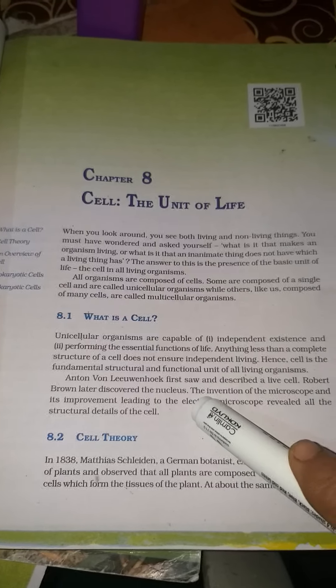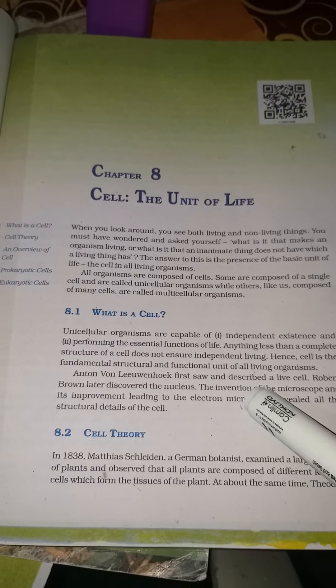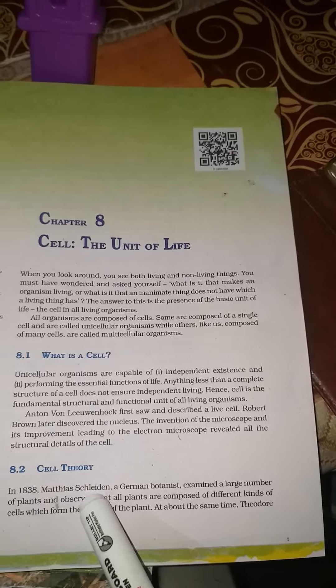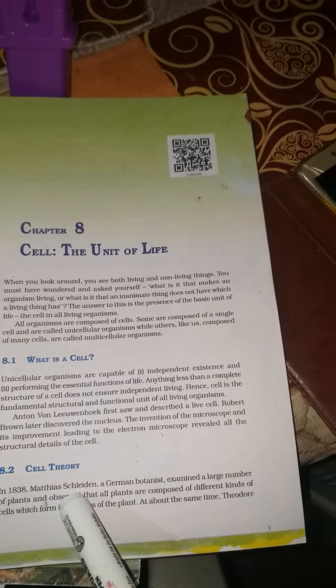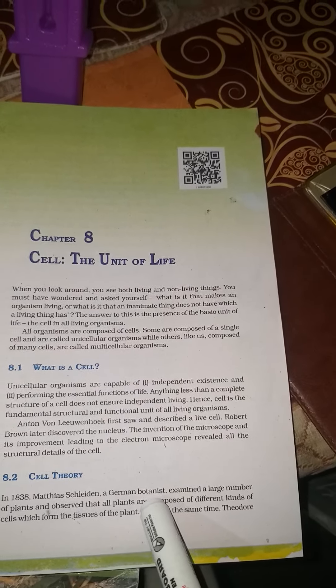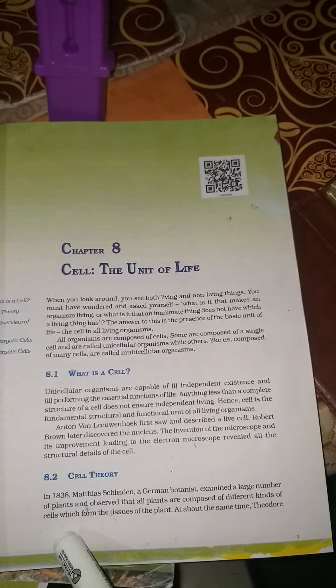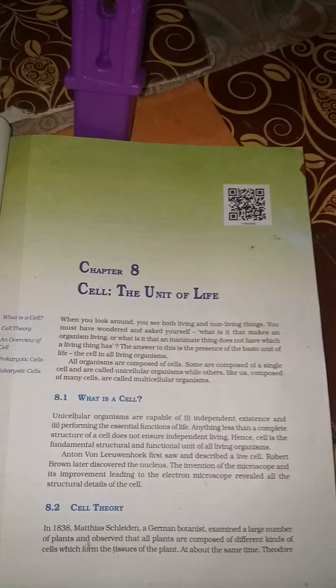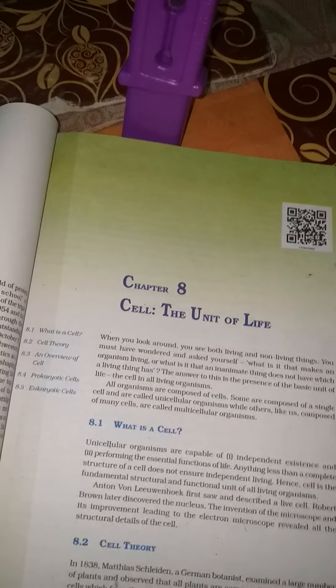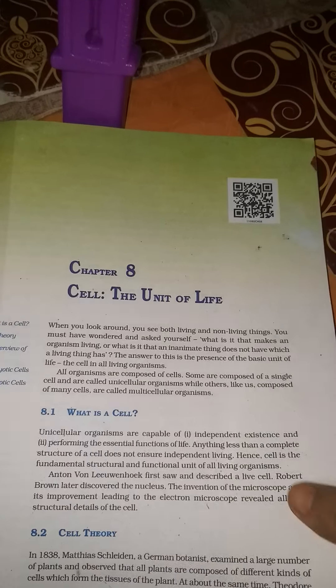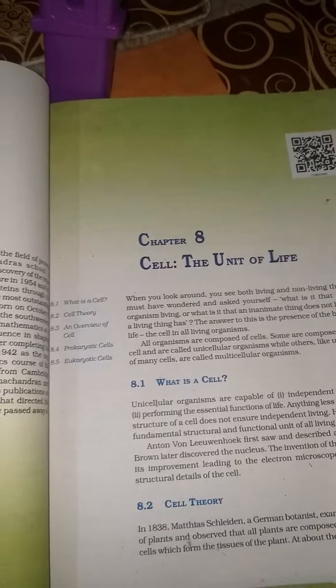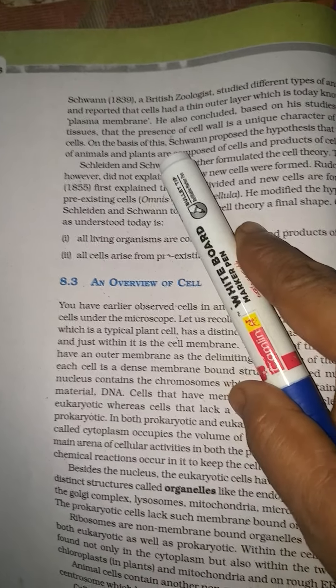Cell theory is a very important part. The cell theory was proposed by Schleiden, Schwann, and Rudolf Virchow. Schleiden was a botanist who examined a large number of plants and observed that all plants are composed of different kinds of cells from the tissue of the plant. Schwann was a zoologist, and they both collaborated together.